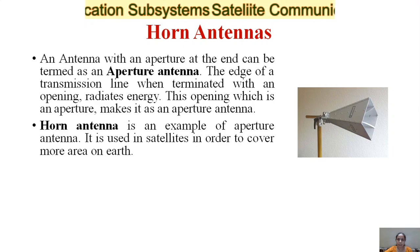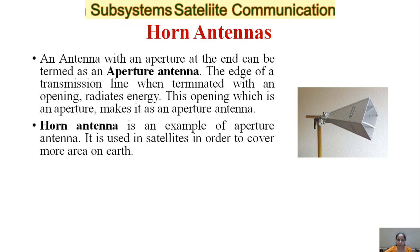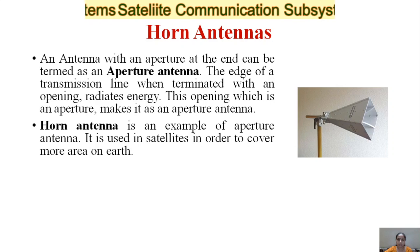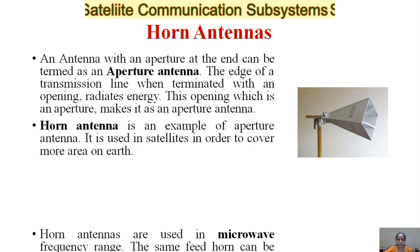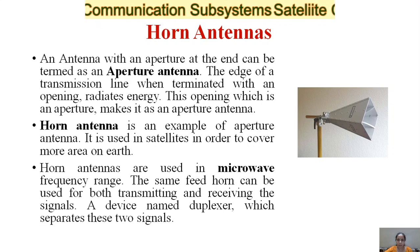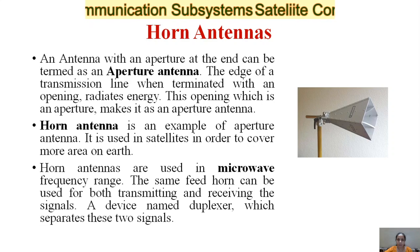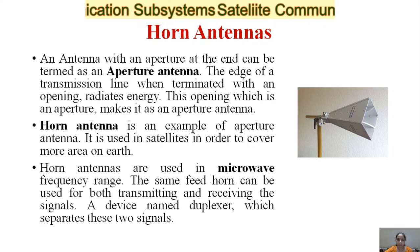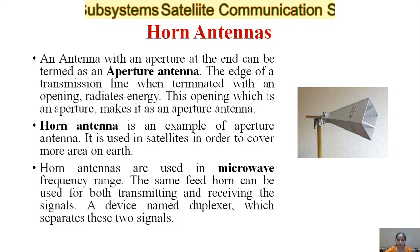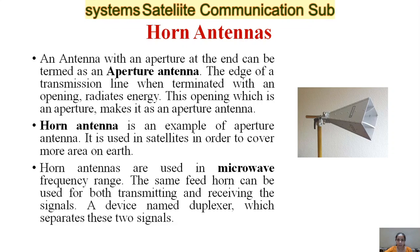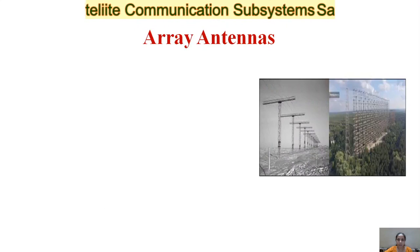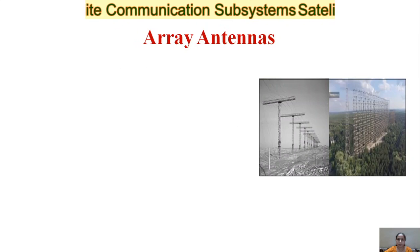Horn antennas are an example of aperture antennas. They are used in satellites to cover more area on the earth and are used in the microwave frequency range. The same fed horn can be used for both transmitting and receiving signals; a device called a duplexer separates these two signals.